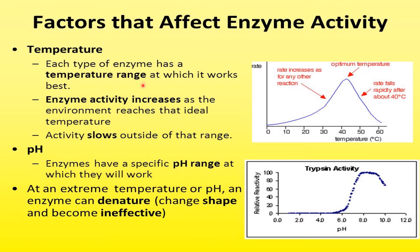The next factor is pH. Enzymes have a specific pH range at which they work well. For example, trypsin works well at pH 6. As the pH starts to increase, enzyme activity will start to decrease. So enzyme activity is affected by both pH as well as temperature.